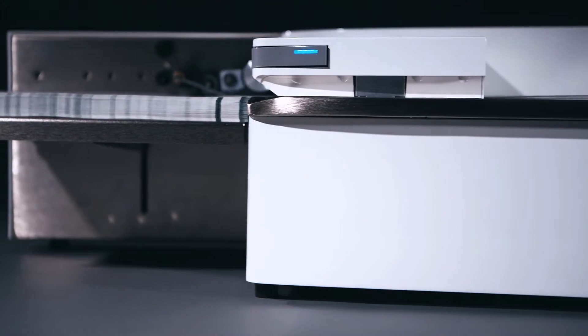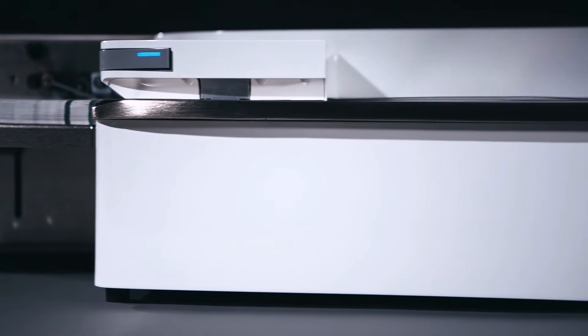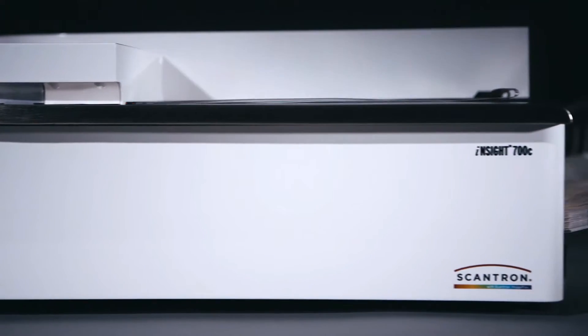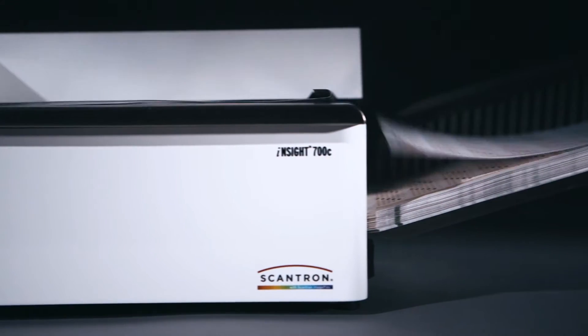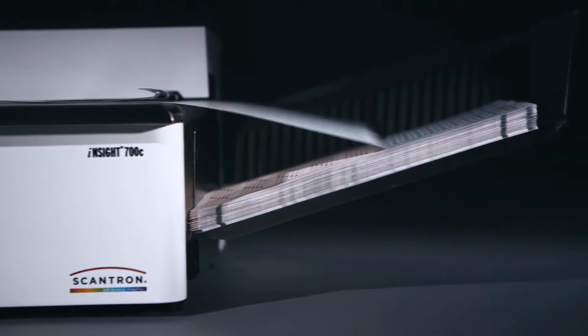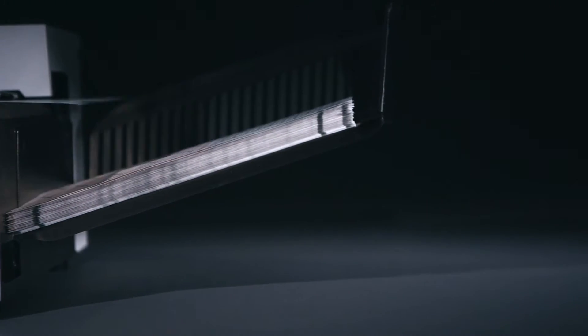Need to archive full forms? Require ID images such as pictures or thumbprints for archiving? No problem! The Insight 700C's single unified read head captures both OMR marks from pencil or ink forms and images simultaneously using the same read head.